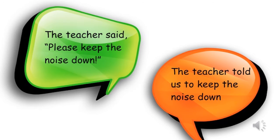In the first case it is written: the teacher said 'Please keep the noise down.' Here 'please keep the noise down' is in quotations, so it is direct speech. The verb 'said' is used here — it is known as the reporting verb, while the thing in quotations is the reported speech. In indirect speech it will be: the teacher told us to keep the noise down.